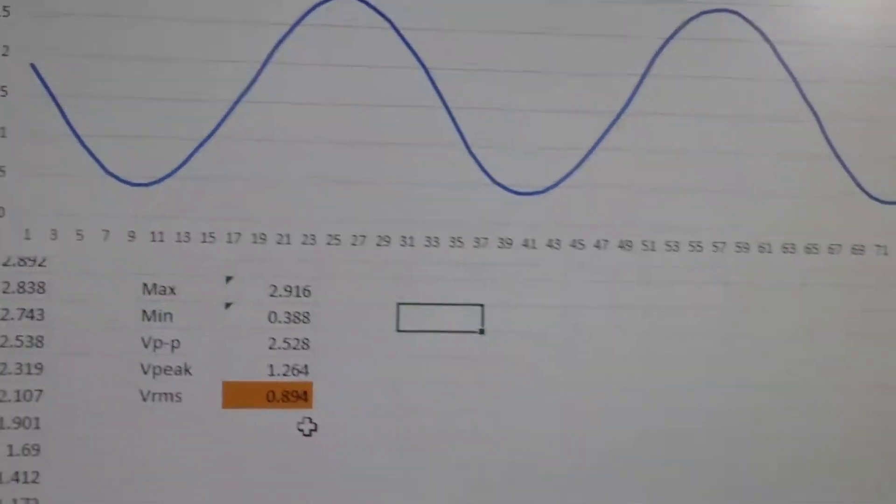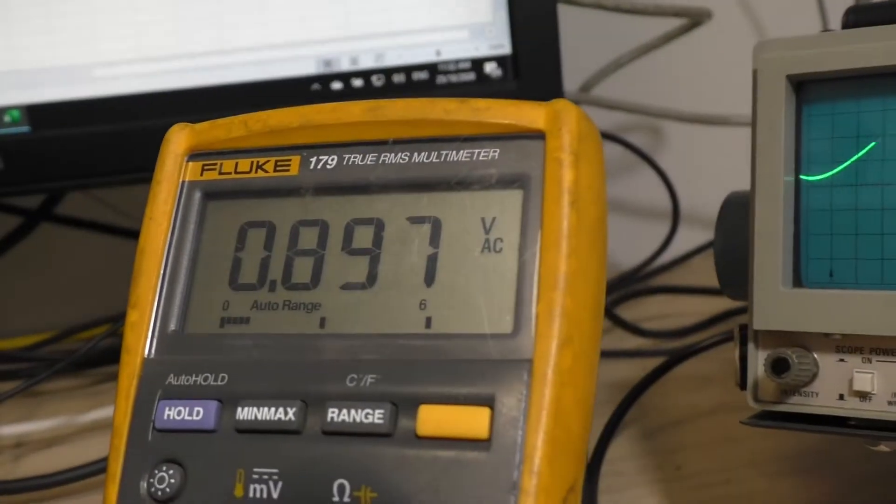And it's giving me 894. Now if you look at what the multimeter is reading, 0.897.